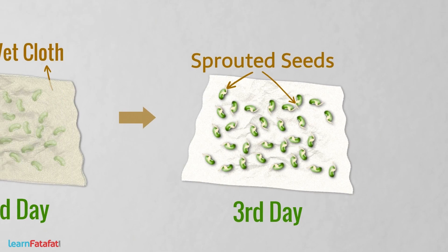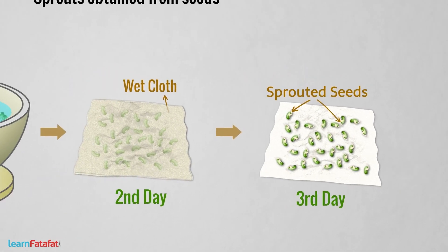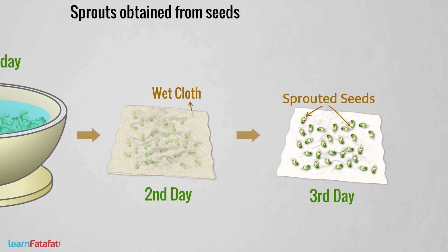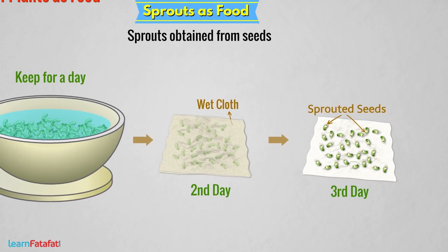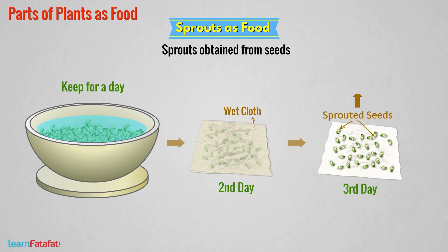Here we say that the seeds are sprouted. If you did not find the structures, wash the seeds with water and keep them covered in a wet cloth for the next day. The sprouted seeds provide much more nutrients than raw seeds. So can you now help your mother to make delicious dishes with the sprouted seeds? You must try it.